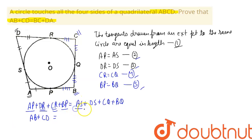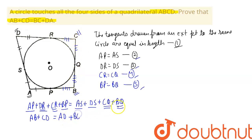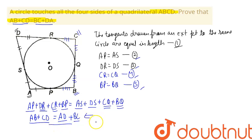On the right-hand side, AS plus DS equals AD, and CQ plus BQ equals BC. So we have proved that AB plus CD equals AD plus BC, which is exactly what was required. We have proved the given statement.